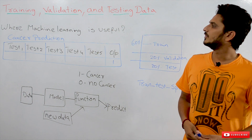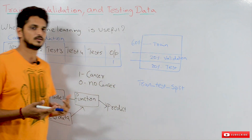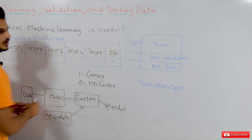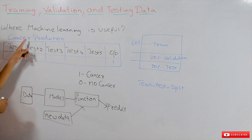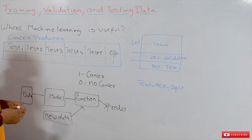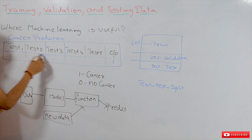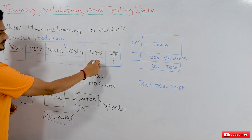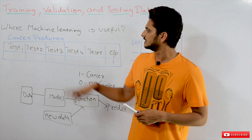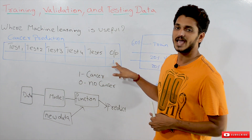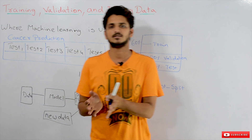Before going into the class, we must have an understanding about what machine learning is and where it is useful. Let's take an example: the cancer prediction dataset. This dataset consists of 10,000 patients — they collected test samples on 10,000 different patients and taken five different tests. Based on the values from these five tests, the doctors determined whether the patient is having cancer or not. One means the patient is having cancer; zero means the patient is not having cancer.